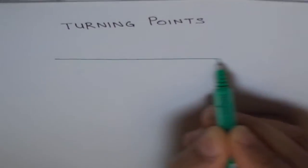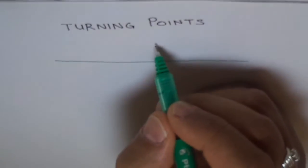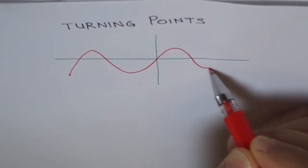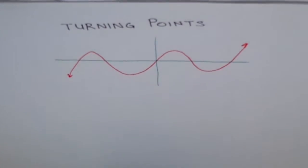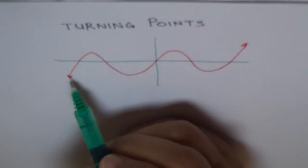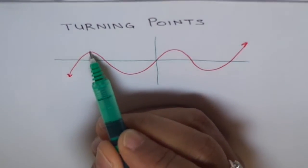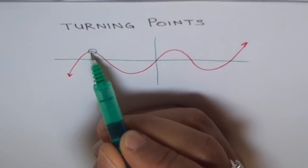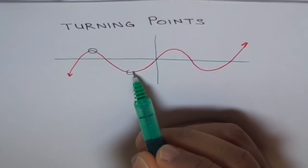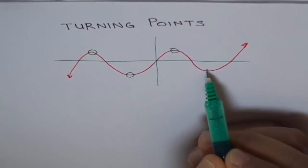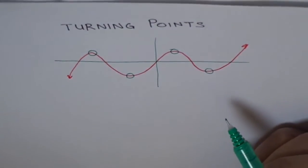Let's say we have a polynomial. Let me draw a polynomial first. Now here, what is the turning point? You see, it's moving like this and here it turns. So that is one turning point. This is another turning point. This is another turning point and this is another turning point.